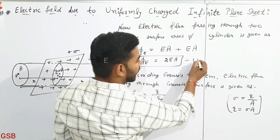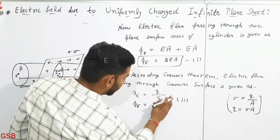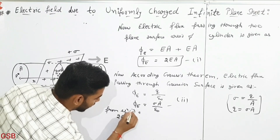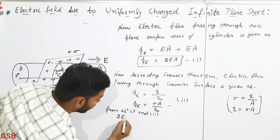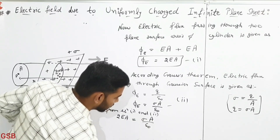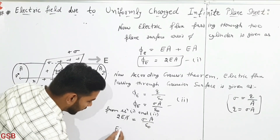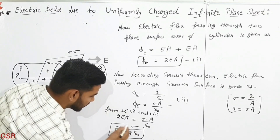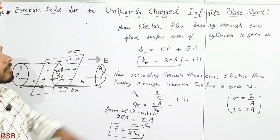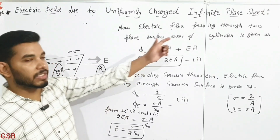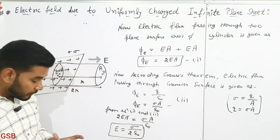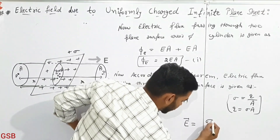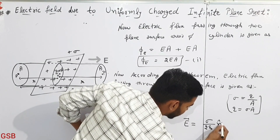From these two equations, we have 2EA equals sigma·A divided by epsilon naught. The area A cancels out, so E equals sigma divided by 2·epsilon naught. This is the electric field due to the infinite plane sheet at point P.